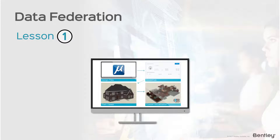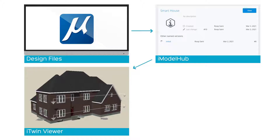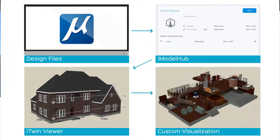Before we talk about data federation, let's do a quick recap of what we've done so far. We started with some design files in MicroStation, pushed them into the iModel Hub, and then pulled them into an iTwin Viewer. Then we started customizing our iTwin Viewer to change up the visualization of the model, and now we're going to be connecting it to a smart device database.